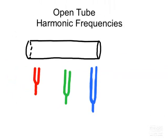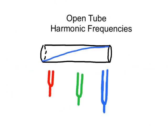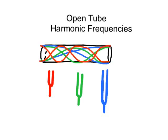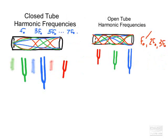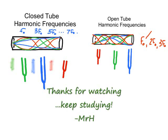Likewise, for open tube frequencies, the first one that works is followed by the next one going one additional time, then the red. In the open tube, we get F₀, then 2F₀, then 3F₀ — it just goes up by integer numbers. So to review: if you have a closed tube on one end, your harmonic frequencies are F₀, 3F₀, 5F₀, 7F₀, and so forth. And in an open tube, they are just integer multiples of F₀.